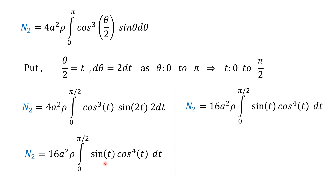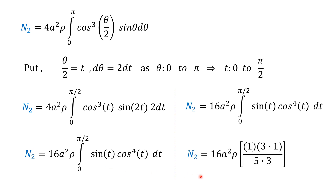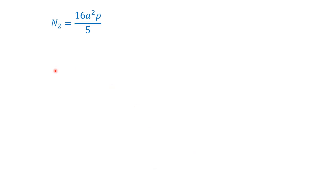We apply the reduction formula for ∫₀^{π/2} sinᵐt · cosⁿt dt with m = 1 and n = 4. This gives 16a²ρ × (1) × (3·1) / (m + n) = 16a²ρ × 3/(5), reduced appropriately. Further simplification gives N2 = 16a²ρ/5.